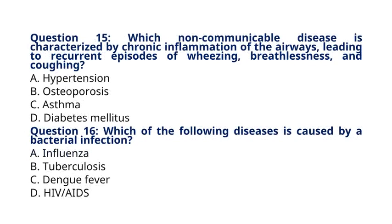Question 15: Which non-communicable disease is characterized by chronic inflammation of the airways, leading to recurrent episodes of wheezing, breathlessness, and coughing? A. Hypertension, B. Osteoporosis, C. Asthma, D. Diabetes mellitus. The correct answer is option C, Asthma. Explanation: Asthma is a chronic inflammatory disease of the airways characterized by airflow obstruction, bronchial hyperresponsiveness, and respiratory symptoms such as wheezing, breathlessness, chest tightness, and coughing.